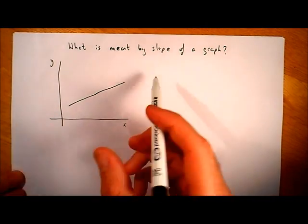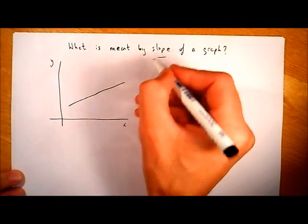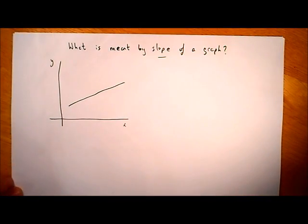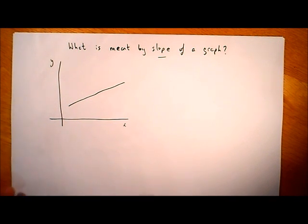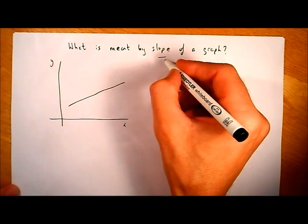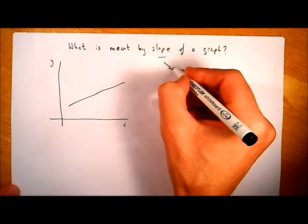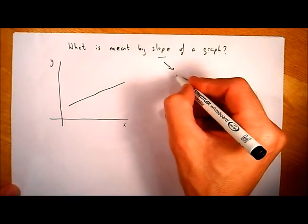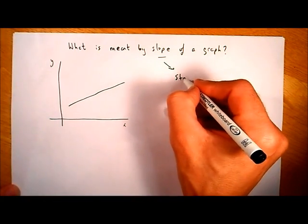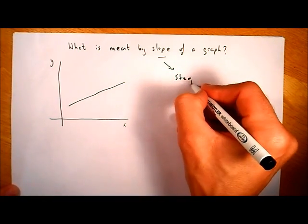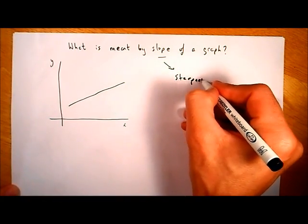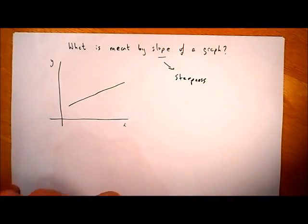We're going to have a look at this idea of slope of a graph and what exactly it means, because it's very important for what we're going to be doing in the next few videos. The slope of a graph is a measure of steepness of a graph.